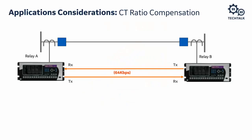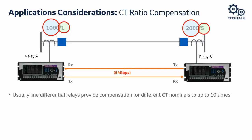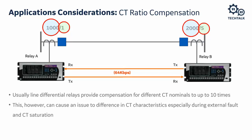One application consideration is different CT ratios at each substation, which can occur when different utilities have different standards. Today line current differential relays can tolerate up to 10 times CT ratio difference, depending on the relay. However, when there is a very large CT ratio difference, issues can arise during external faults because CT characteristics differ: one CT may saturate more than another, or one saturates while the other does not.